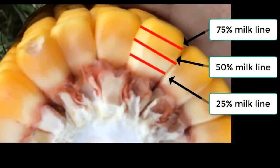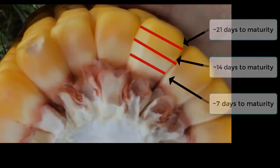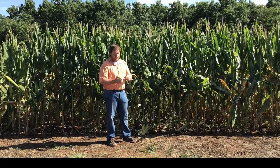This milk line will progress from the top of the kernel to the bottom, and going from the top to the bottom takes about 28 days. It goes about a quarter of the kernel per week. So we can determine if we're at 75 percent milk — just a little bit under the top — or 25 percent milk which is almost all the way to the bottom, and from that determine if we have one, two, or potentially three weeks to physiological maturity — and that's our next stage.